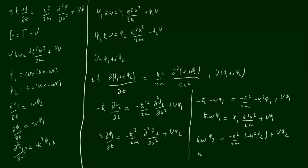So, simplifying this one as well, we end up with ℏωψ₂ equals the minuses cancel, so that's k²ℏ² over 2m ψ₂ plus Vψ₂.